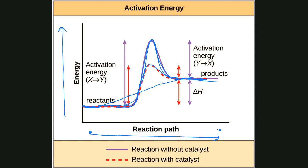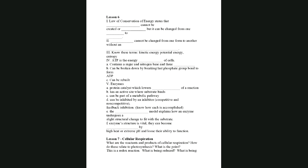Moving on to lesson 7 — cellular respiration. There's a lot going on in this lesson. We need to talk about the chemical equation for this process, how cellular respiration and photosynthesis relate to one another, and what a redox reaction is — what's being reduced and what's being oxidized.